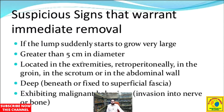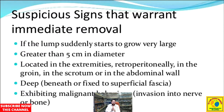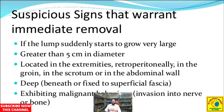There are suspicious signs that warrant the immediate removal of a lipoma. We are in the field of homeopathy, but there are some limitations, especially in lipoma cases where it is mandatory to go for immediate surgical removal. If the lump suddenly starts to grow very large — greater than 5 cm in diameter, located in the extremity, retroperitoneally, or growing in the scrotum or abdominal wall — surgery is required. Deep lipomas fixed to the superficial fascia and those exhibiting malignant behavior must also be removed surgically.